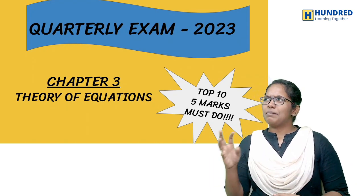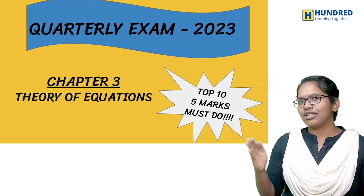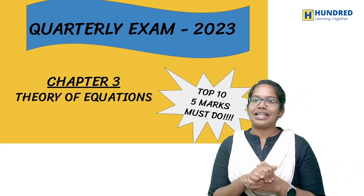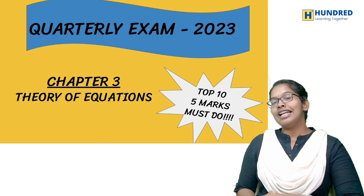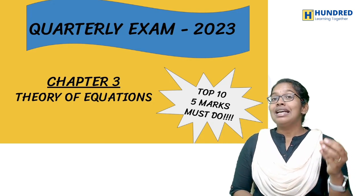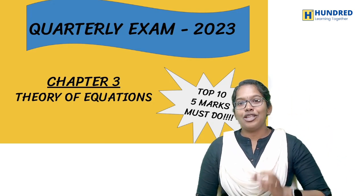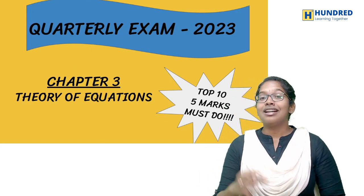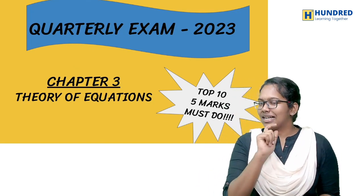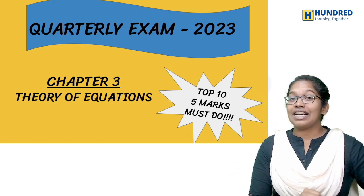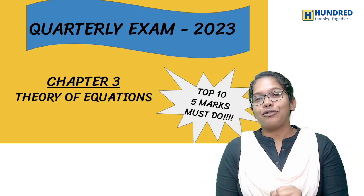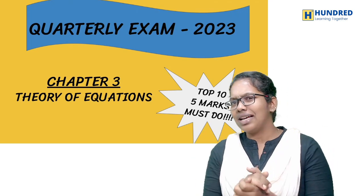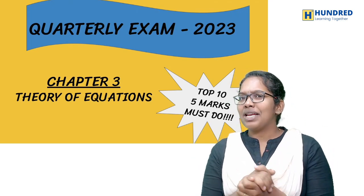Mostly in public exams, you will see five-mark questions in rare cases. But in the quarterly exam, we have to prepare this chapter. So five marks in this chapter is from sections 3.4 and 3.6.